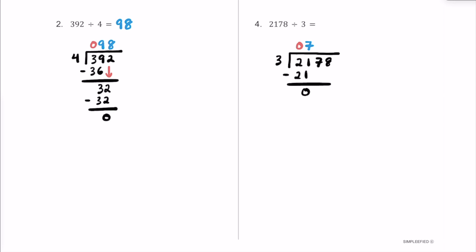Let's bring the 7 down and repeat the process. How many times does 3 fit into 7? Two 3s gets you 6, and that's as close to 7 as we can go, so we put a 2 here. 2 times 3 is 6, so we were off by 1. We still have a number to bring down — this 8 joins this 1 to make 18.